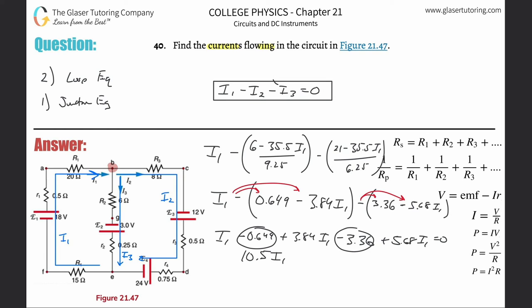The constant terms are −0.649 − 3.36 ≈ −4.01. So 10.5·I1 − 4.01 = 0, giving 10.5·I1 = 4.01. Dividing using exact values, I1 ≈ −0.381 amps. The negative sign means the current flows opposite to the predicted clockwise direction — counterclockwise — but the magnitude is correct.